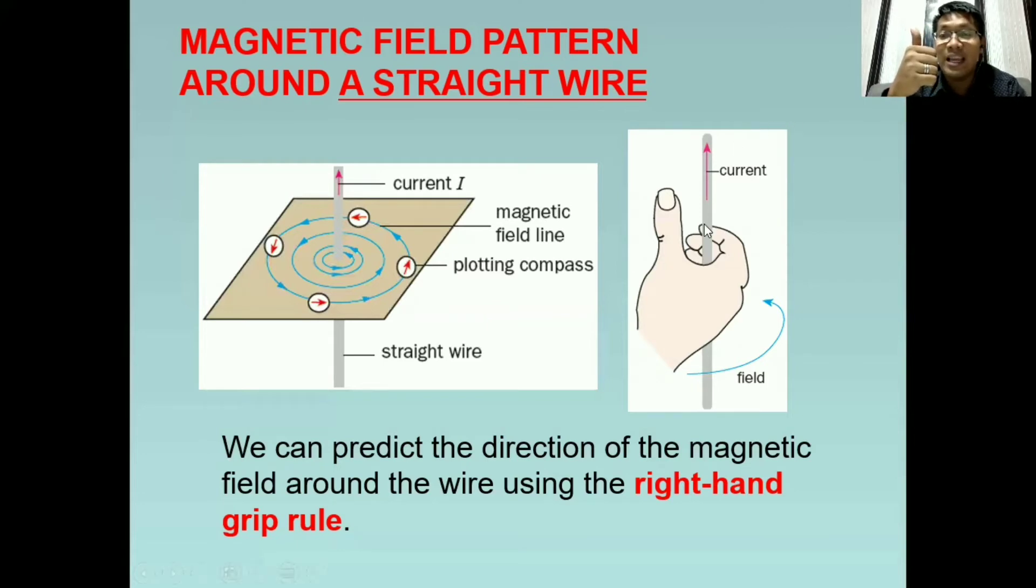As if we will hold the wire like this, tatandaan natin na ang thumb ay nagsisignify ng direction ng current. At sa example natin, it is going up. So it is pointing upward. Now, when you check your fingernails, the direction of your fingernails, ganun yung magiging direction ng magnetic field. And in this case, when the current is upward, then the magnetic field is counterclockwise.